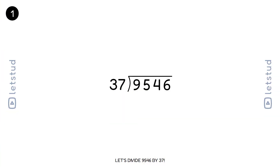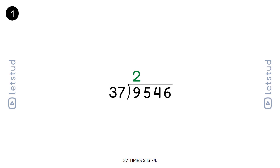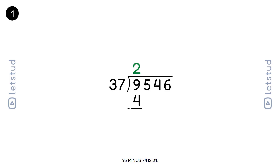Let's divide 9546 by 37. We start with the digit 9. 37 doesn't fit into 9, so we look at the first two digits, 95. 37 times 2 is 74. 95 minus 74 is 21.